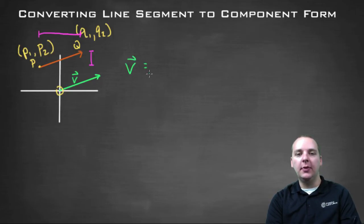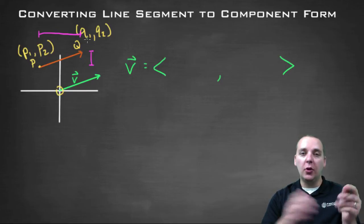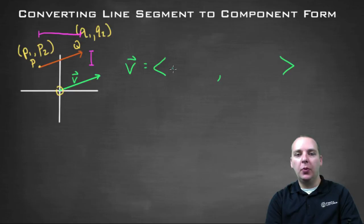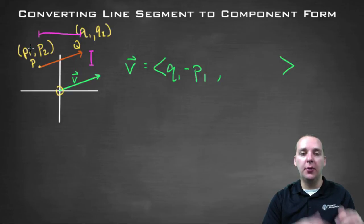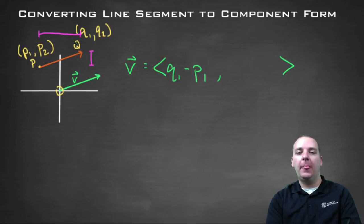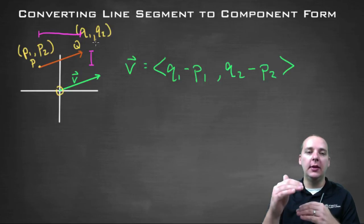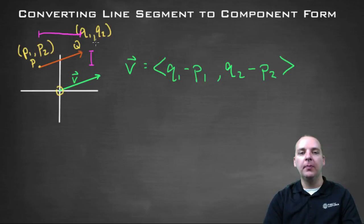So here's how we make this happen. We'll take vector V in component form will be equal to, to get the horizontal distance, we'll take Q one minus P one. That's the X coordinate for Q minus the X coordinate for P, and that will give you the distance between P and Q horizontally. And then we'll take Q two minus P two, and that will give you the vertical distance between P and Q. We're taking the Y coordinate of Q minus the Y coordinate of P.